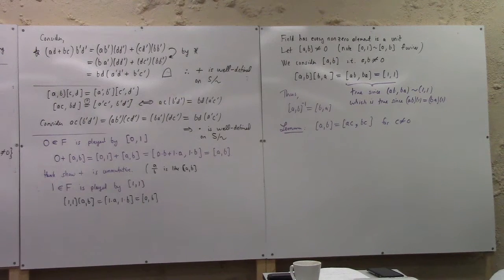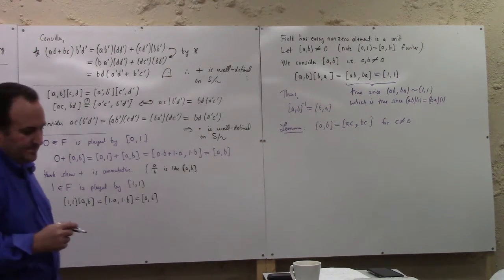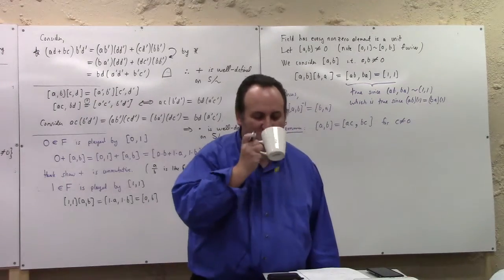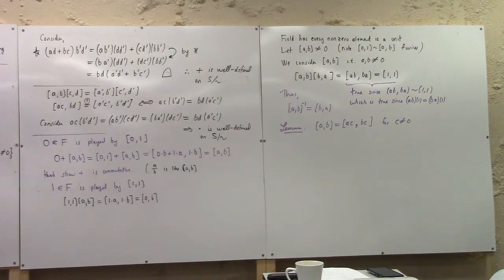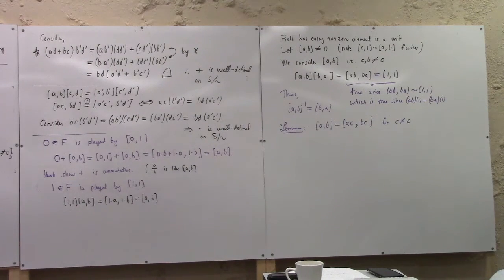The characteristic of this f is zero. It contains a copy of z, so the prime subfield here would be the rational numbers. We can almost leave early. Leave early? I don't even... Those words don't even make sense to me.